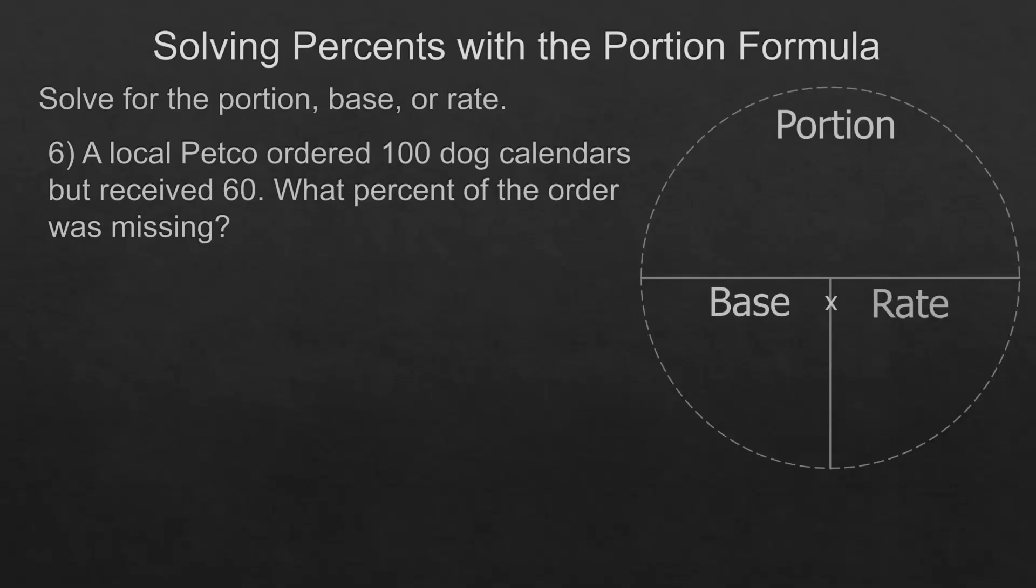A local pet co ordered 100 dog calendars but received 60. What percent of the order was missing? They received 60, so the number missing would be 40 because the total was 100.